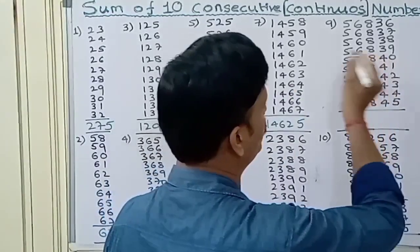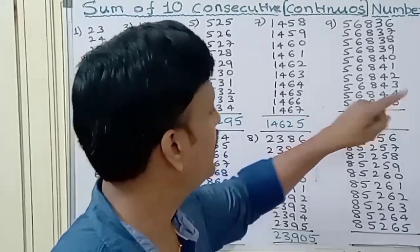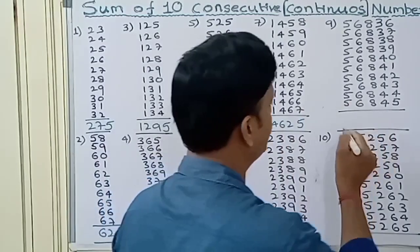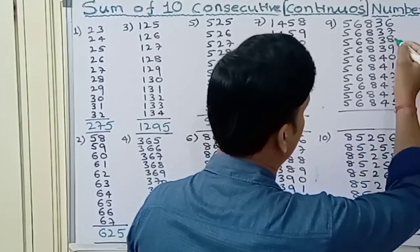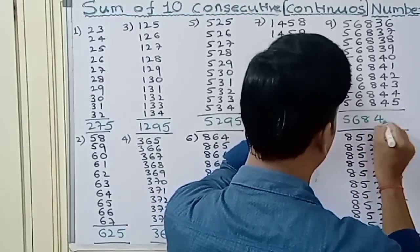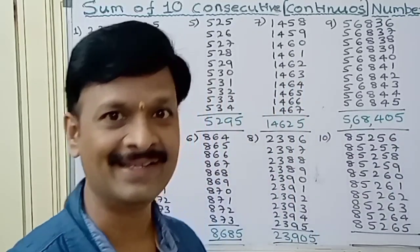Next, the 9th question. 56836 to 56845, all these 10 consecutive integers. For the sum, count 1, 2, 3, 4, 5. You can write 568405. 568405 is the sum.